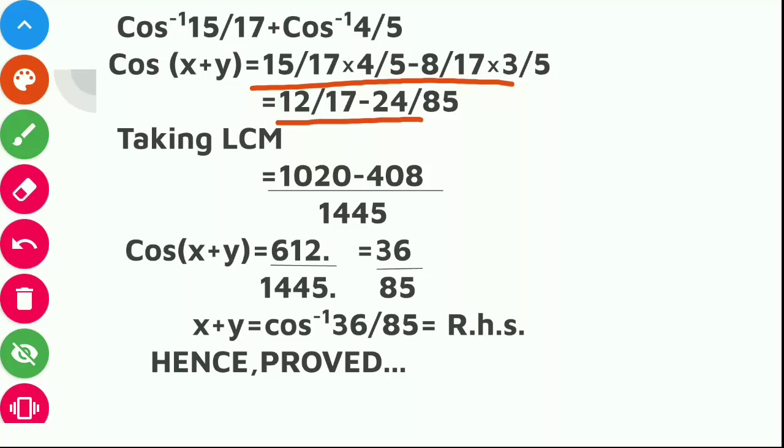So here I have put the values and by doing calculations, simple calculations are there. Here I have taken the LCM and we will get cos x plus y is equal to 612 divided by 1445. Cancelling them on the table of 17, we get 36 by 85.